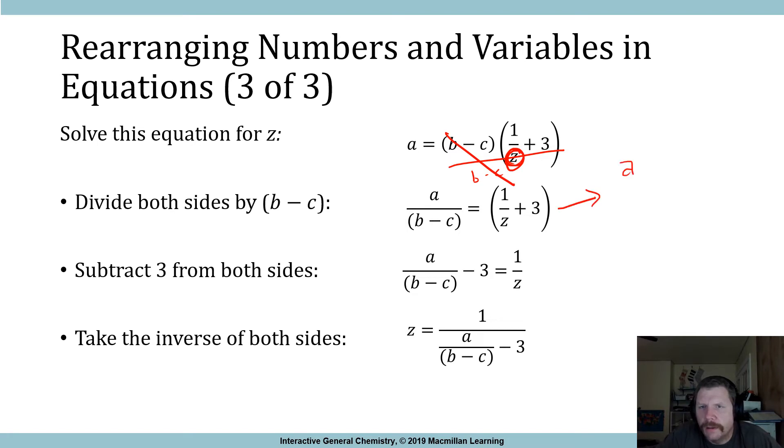And now we've got a over b minus c is equal to 1 over z plus 3. Okay, remember our aim is to get z alone, so we've gotten a little bit closer. Now what we can do is we can subtract 3 from both sides. Okay, easy peasy. Now we've got a over b minus c minus 3 equals 1 over z. As you can see, we've gone from z being kind of buried in this whole mix to now, well, it's 1 over z.